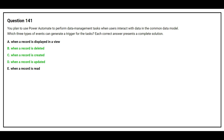The correct answers are: Option B, when a record is deleted; Option C, when a record is created; and Option D, when a record is updated.